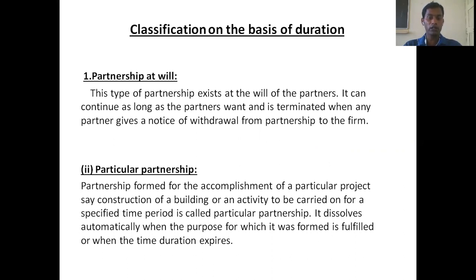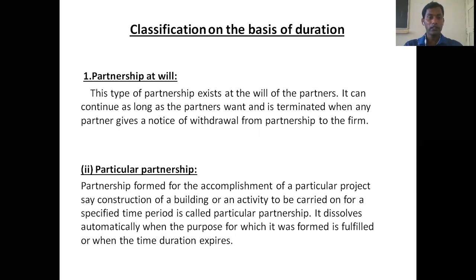The second type based on duration is particular partnership. A partnership formed for the accomplishment of a particular project — for example, construction of a building or a bridge — carried on for a specified time period is called particular partnership. It dissolves automatically when the purpose is fulfilled or the time duration expires. For example, if we form a partnership for construction of a building, after completion our partnership agreement comes to an end.